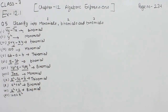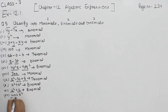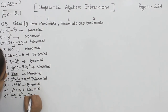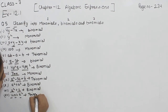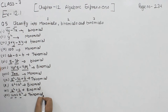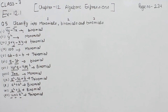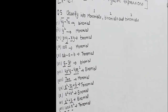So two terms is known as binomial. Now the last one: 1 plus x plus x square — 1, 2, and 3 — we are having three terms, so three terms is known as trinomial. With this we have completed question number 5. In the next video we are going to start with question number 6.